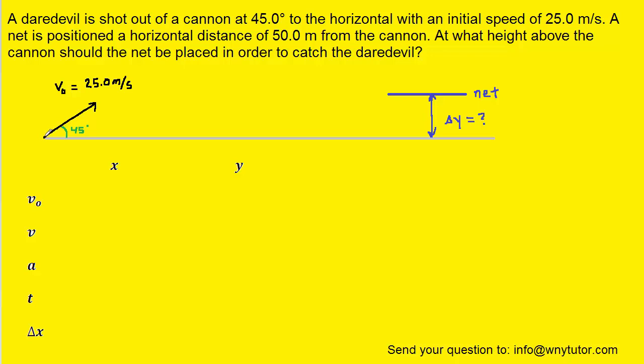So at this position we have the cannon and it's firing the daredevil out of the cannon at 25 meters per second with a 45 degree angle. The daredevil is going to fly all the way over to the net which is situated over here, and what we have to figure out is how high above the level of the cannon the net needs to be situated. In other words, we just need to find the vertical displacement. Our next step is to begin filling the information that we know into this projectile motion table.